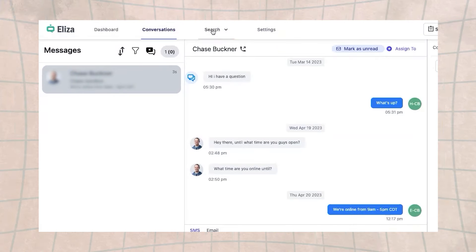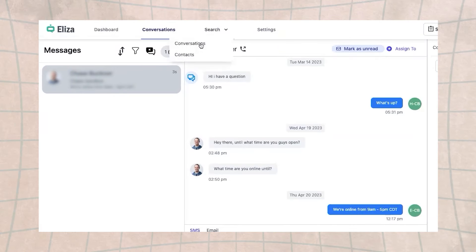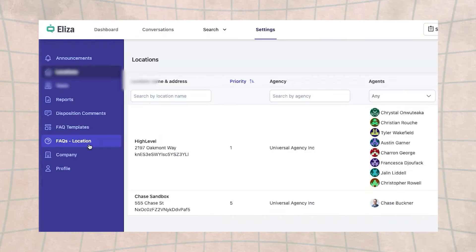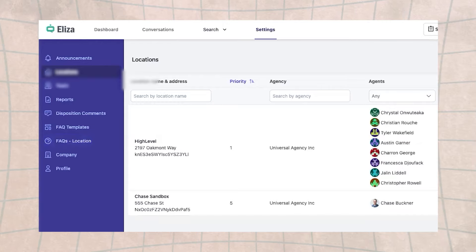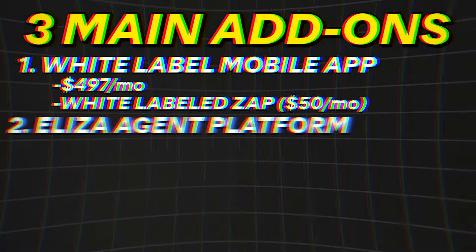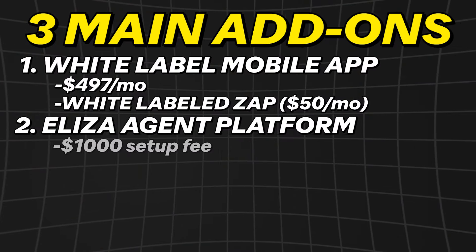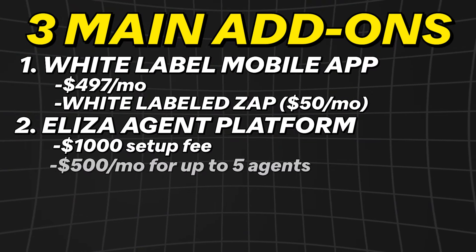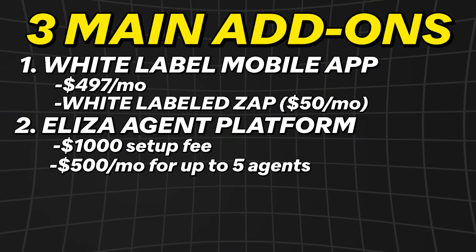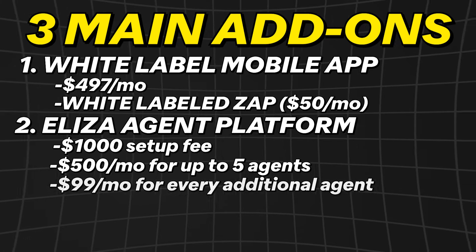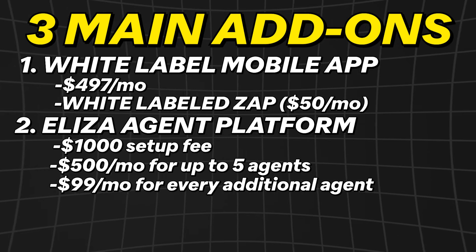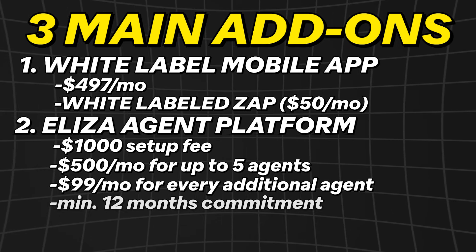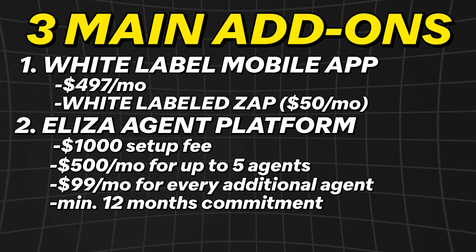The second add-on is the Eliza agent platform. What this does is put all of your sub accounts into one screen so that if you're doing done-for-you appointment setting for your clients, they can access all of the leads in one spot. To get this, it's a $1,000 setup fee, $500 a month for up to five agents, and then $99 a month for every extra agent account after that, with a minimum 12-month commitment.